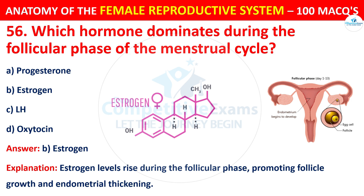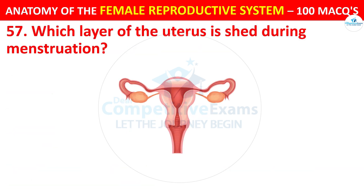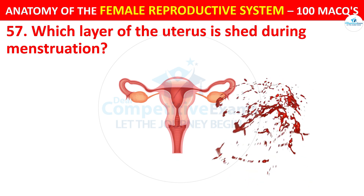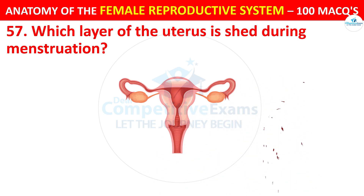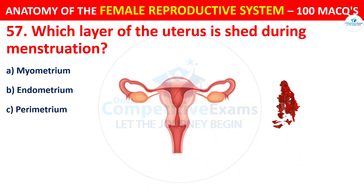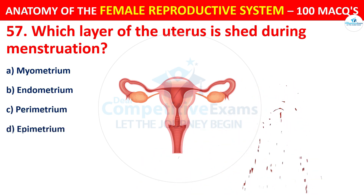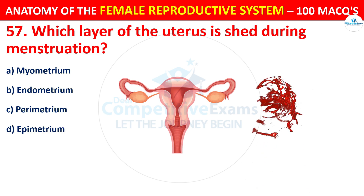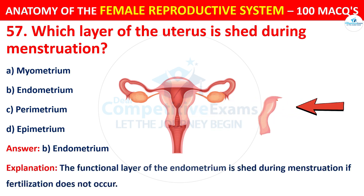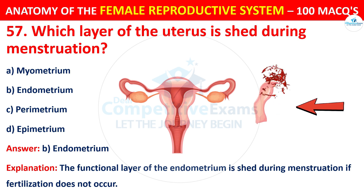Question number 57. Which layer of the uterus is shed during menstruation? Options: myometrium, endometrium, perimetrium, or epimetrium. The correct answer is B — the endometrium. The functional layer of the endometrium is shed during menstruation if fertilization does not occur.